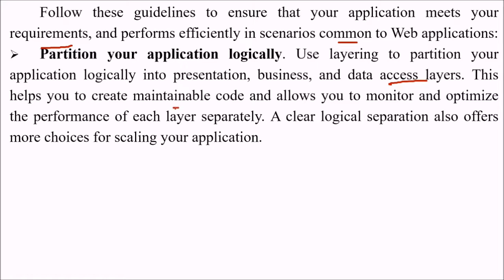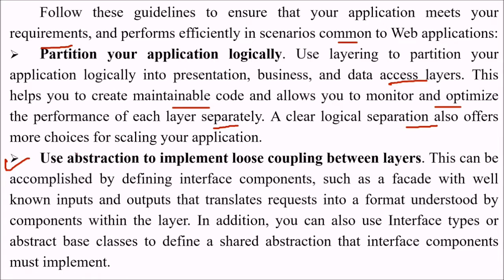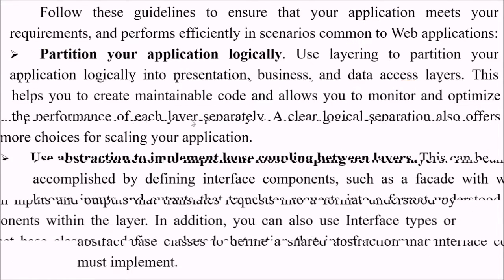Layering helps create maintainable code and allows monitoring and optimizing the performance of each layer separately. A clear logical separation also offers more choices for scaling the application. We need to use abstraction to implement loose coupling between layers. This can be done by defining interface components like a facade with well-known inputs and outputs that translate requests into a format understood by components within the layer. You can also use interface types or abstract base classes to define a shared abstraction.